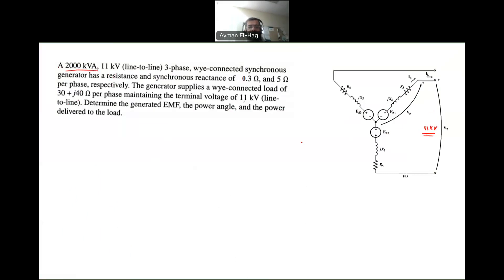Y connection, as you can see it here. And we are given here that 0.3 is your RA, so your RA is 0.3, so this is 0.3 ohm. And your XS is actually 5 ohm. So we are given XS and RA.